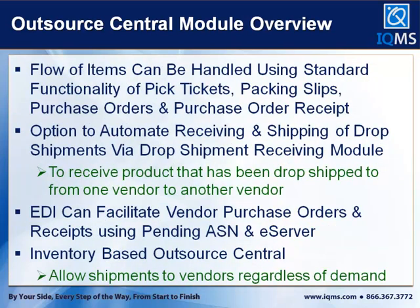The flow of items in Outsource Central can be handled using standard functionality for pick tickets, packing slips, purchase orders, and purchase order receipts. The ship order is the sales order titled the ship order. You can use pick tickets to actually go ahead and do the shipping, or just do packing slips. Then we'll go through purchase orders and receipts.